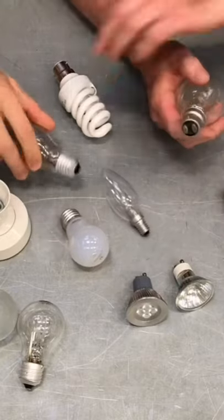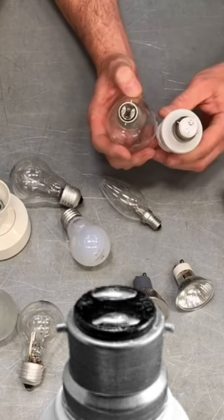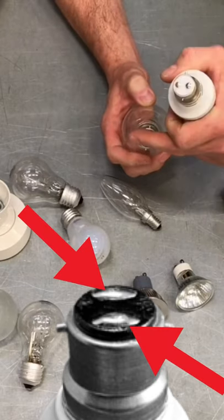And then we've got this style here, so we've got it on both the compact fluorescent and the halogen lamp. We've got the bayonet cap. This time we have two points of contact on the top, and both of them...